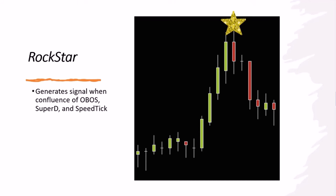The rockstar is the indicator that pulled it all together for so many traders because we've combined some of the best indicators into one to make seeing where your trade entry should be easier. Just because you get a rockstar on a chart does not mean to take a trade. I had a guy who wanted to trade every rockstar — he called them false signals. There are no false signals; the signal prints when there's a confluence of events inside the indicator that suggests this would be a good place to take a trade under our rules.